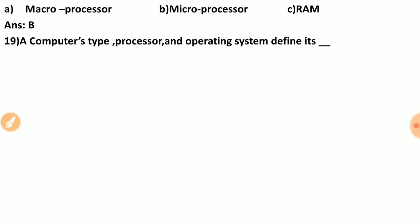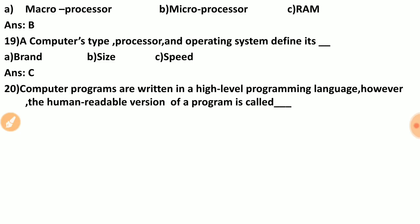Question nineteen: a computer's type of processor and operating system define its — brand, size, or speed? Knowing the processor and operating system, you can determine the computer's speed. The correct answer is C — speed.